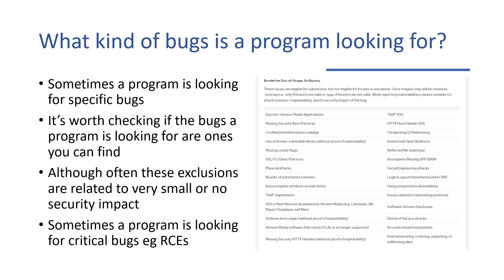The next question when it comes to scope is what kind of bugs the program is looking for. Sometimes a program is looking for specific bugs, and sometimes you have out-of-scope bugs. This is from Verizon's page where they list a bunch of out-of-scope bugs. If you see bugs that you can find easily on that list, the program is probably not very suitable for you — these tend to be out of scope because they're very small or have no security impact.